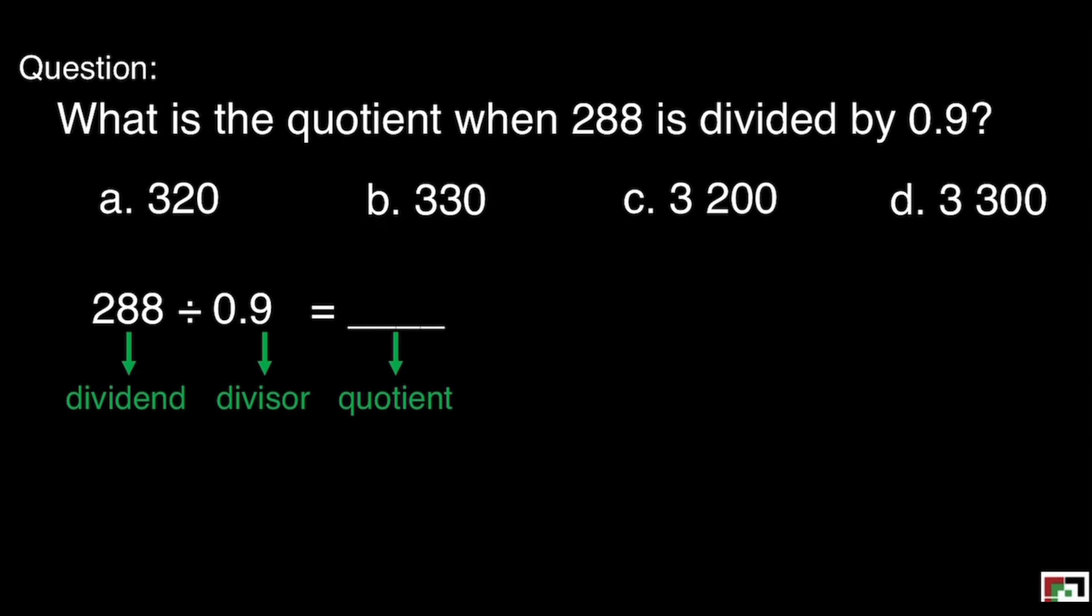Since we have a divisor that is decimal, it is important that we have to make it or change it into whole number. We need one step to make it a whole number. And then whatever we did in our divisor, we have to do that also in our dividend. Our new equation will be 2,880 divided by 9. We are ready to divide.